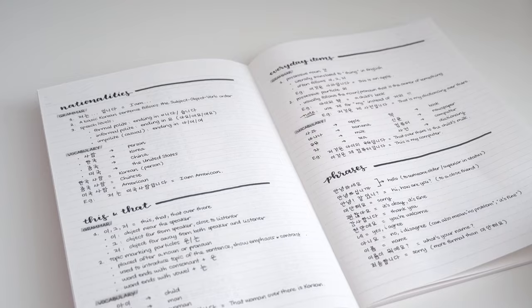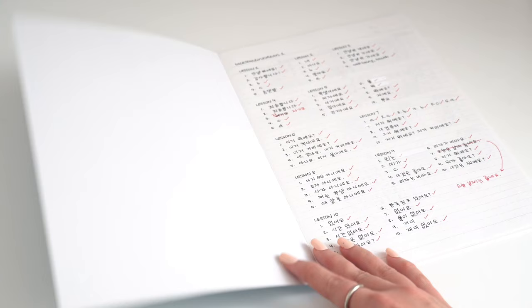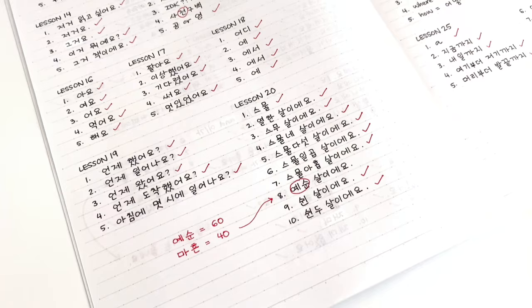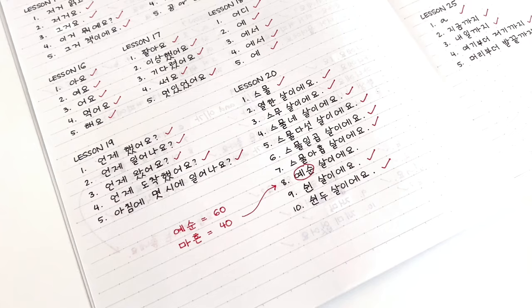One for vocabulary, another one for lessons from Lingodeer app, and another one for practice problems. For me, I prefer keeping a separate notebook for practice problems, especially since things can get messy when I make notes on my mistakes.